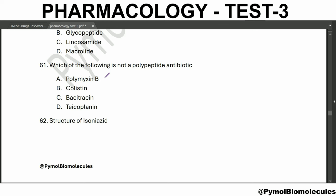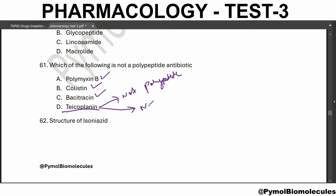Which of the following is not a polypeptide antibiotic? Polymyxin B is a polypeptide antibiotic, colistin is polypeptide, and bacitracin is also polypeptide - so the answer is teicoplanin. Teicoplanin is not a polypeptide antibiotic; it is a newer glycopeptide.